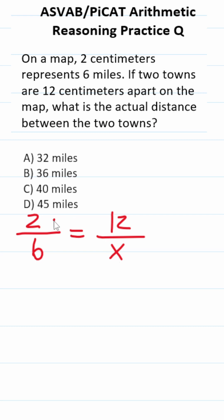Now that we set this up, we solve it via cross multiplication. This becomes 2x equals six times 12, which is 72. Divide both sides by two to get x by itself.